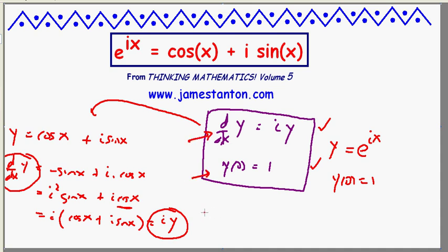So I've got this first part satisfied. Does it also satisfy the second part? Does y(0) = 1? Let's check. y(0) is cos(0) + i·sin(0). cos(0) is 1 plus i times sin(0) is 0. It's 1. It checks.